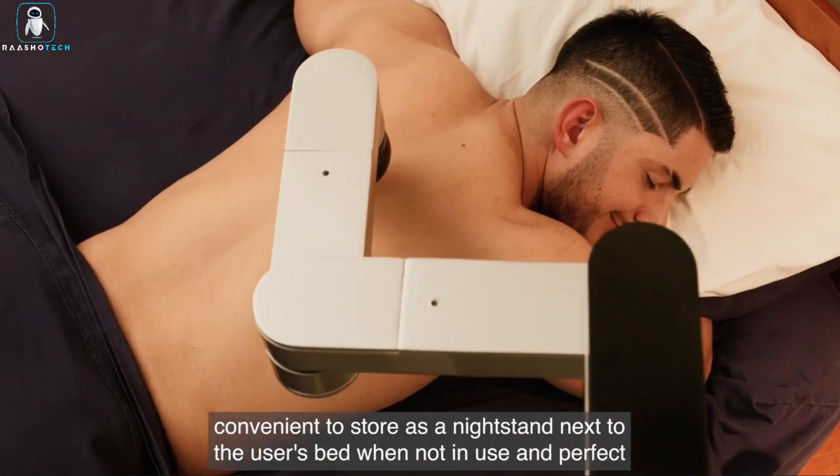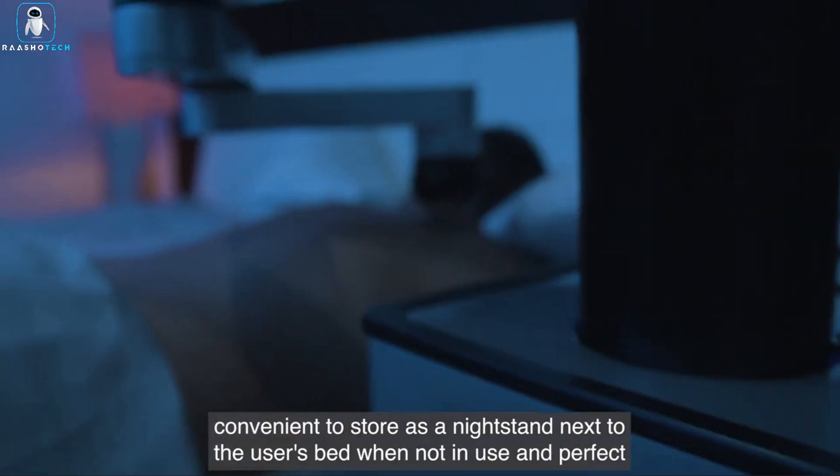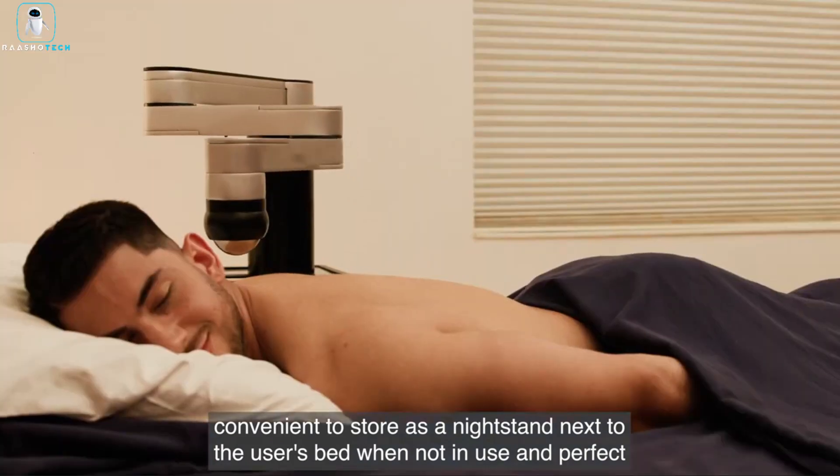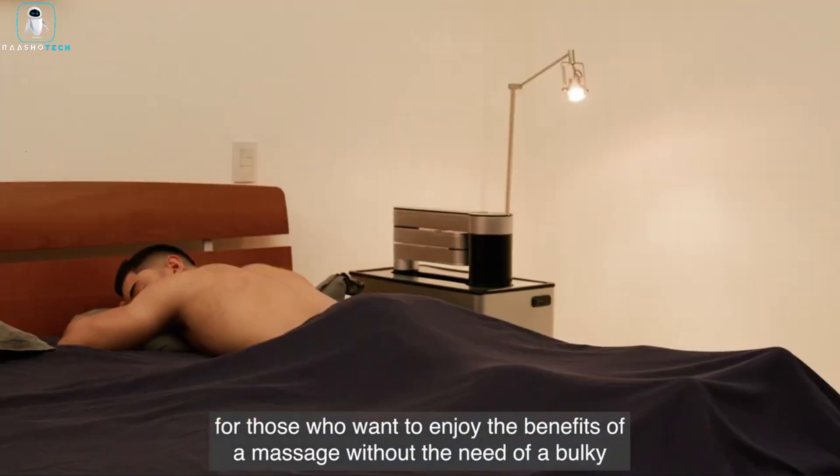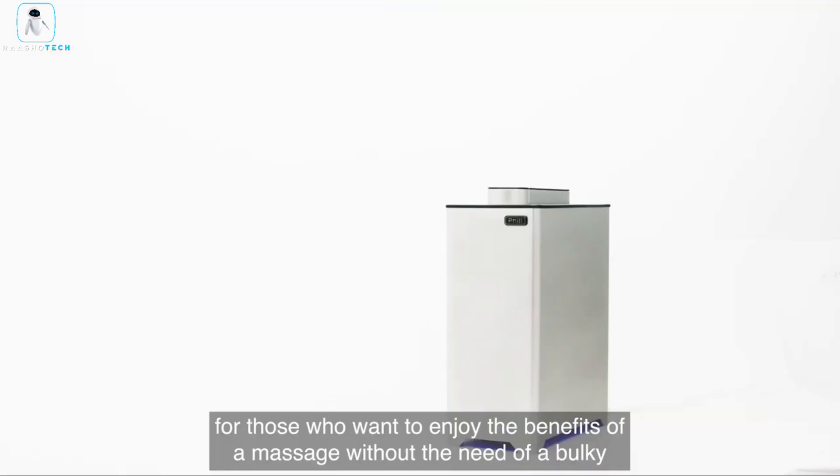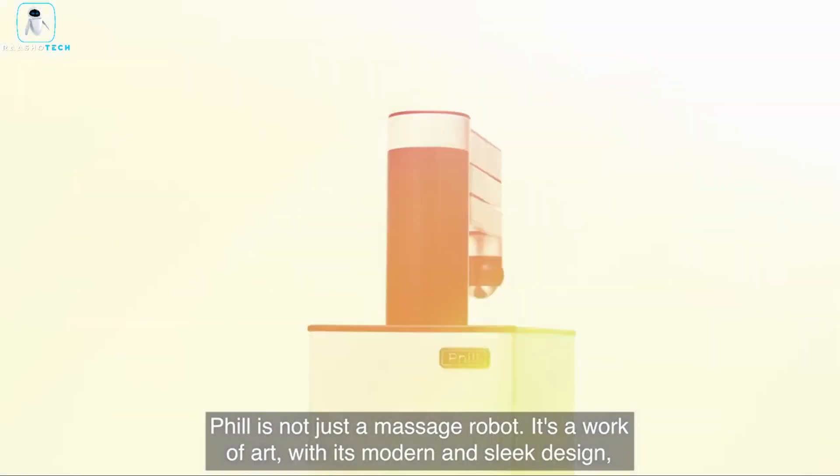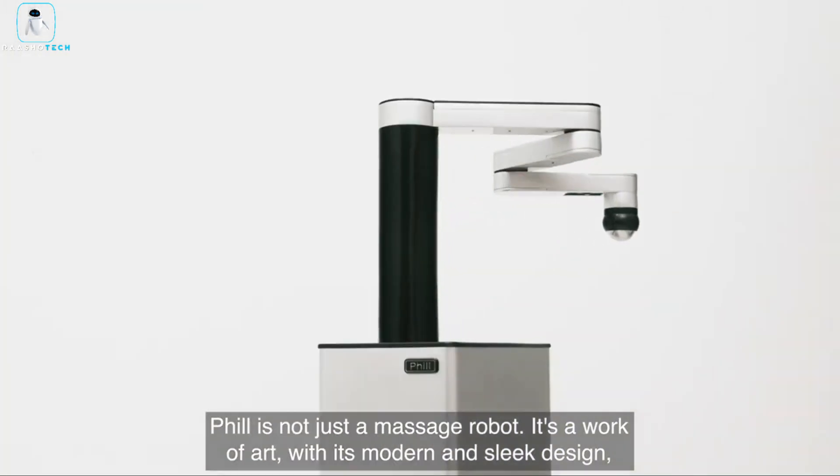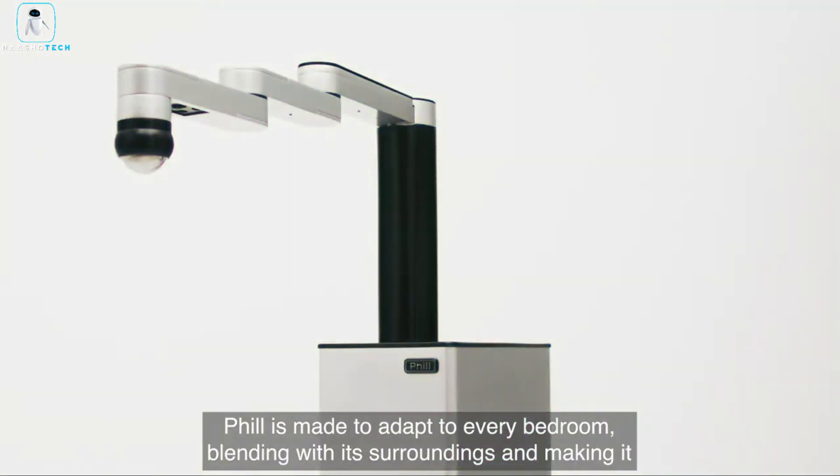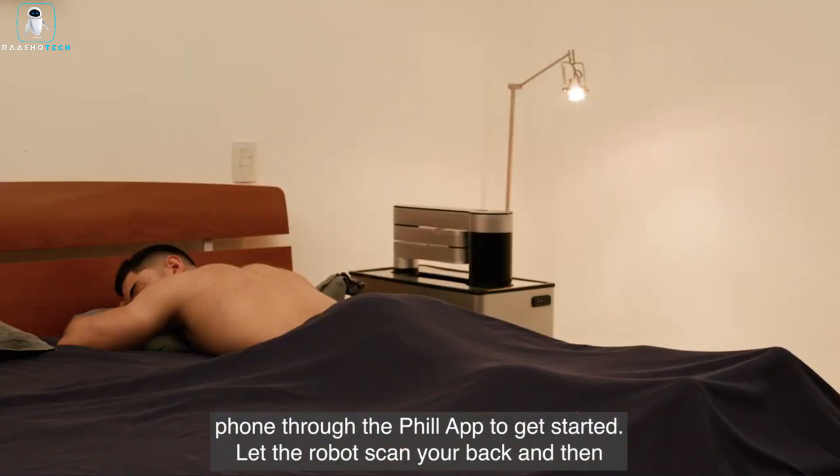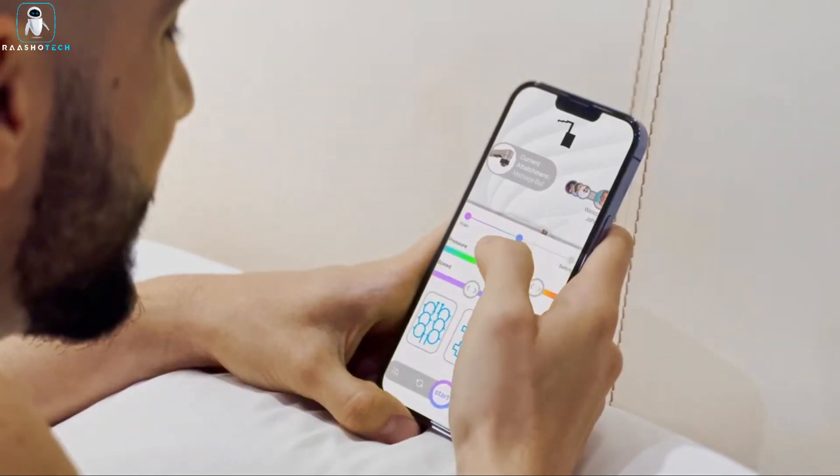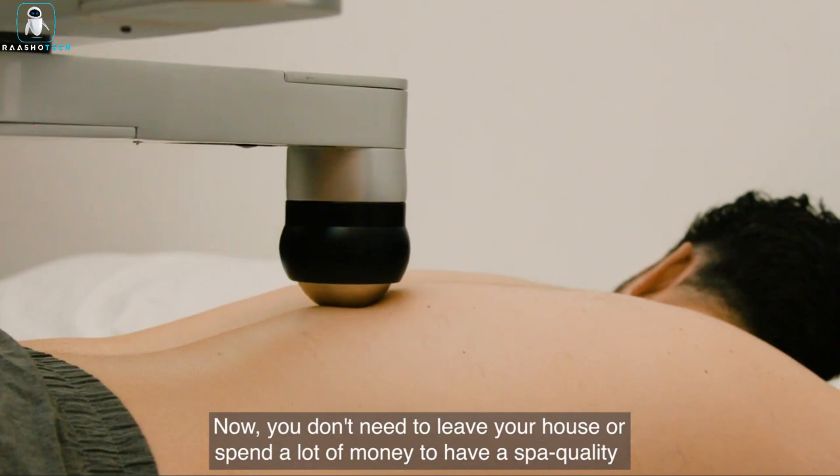Standing tall at 89 centimeters, Phil can apply up to 7 kilograms of pressure, giving you the massage you've always dreamed of. But what sets Phil apart? According to his creators, it's not just about the massage, it's about style. Phil is the epitome of sophistication, blending top-notch materials with a design that screams elegance. Who knew your massage robot could be your new style icon? Phil did.